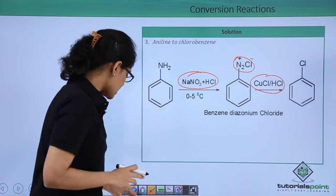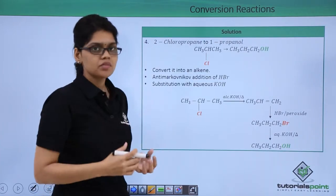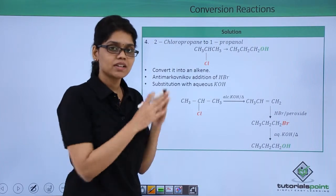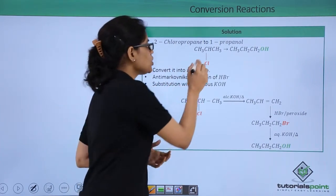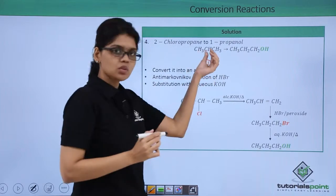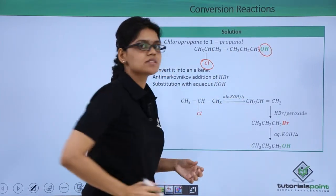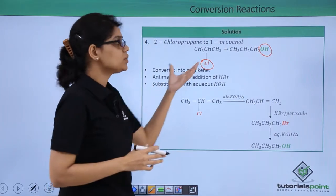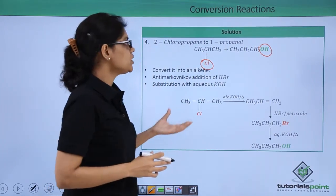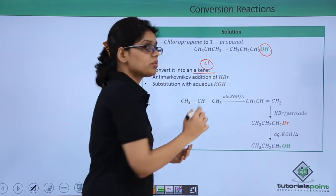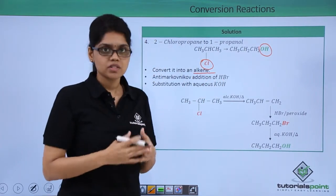Let's now go to the last reaction which is converting 2-chloropropane to 1-propanol. If you look at the reactant and the product you can see that in 2-chloropropane you have chlorine at C2 carbon whereas in 1-propanol you have OH at the first carbon. In order to achieve this conversion we need to convert this alkyl halide to an alkene followed by anti-Markovnikov addition of HBr.